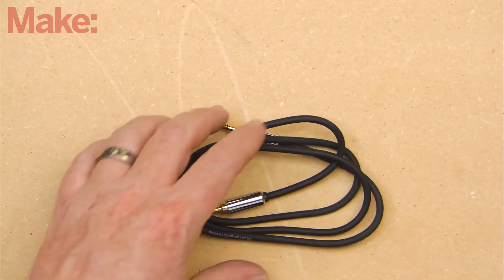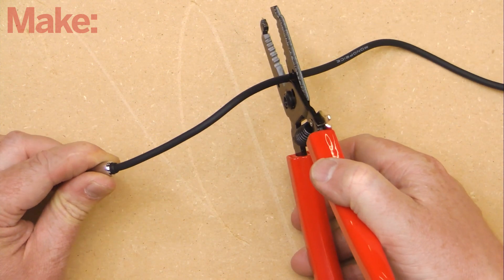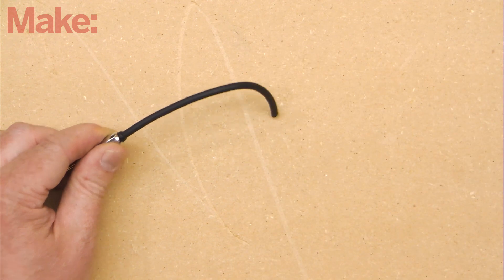Next, we'll be using the audio cable to make two trigger cables, one long and one short. Cut the cable at about six inches from one of the plug ends. Set the shorter cable aside.